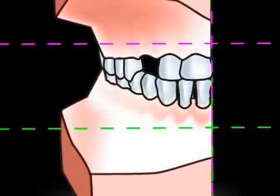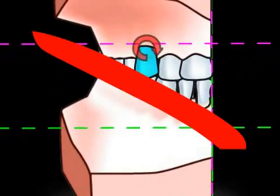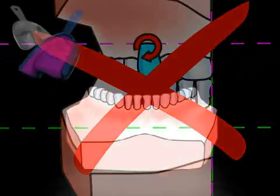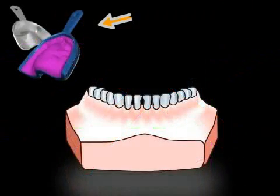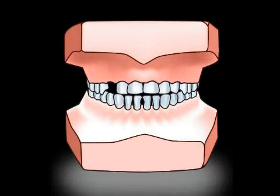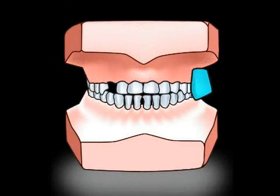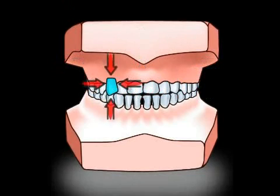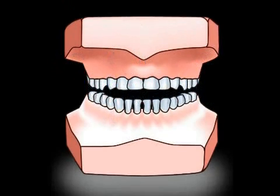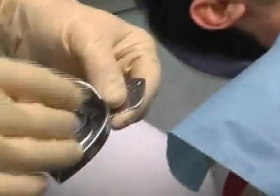The dental prosthesis, shown here in blue, can't be shaped precisely. A full impression yields complete jaw models and thus a so-called three-point contact. Therefore, the models cannot be swiveled, and it is only then that the technician is able to produce an exact fitting dental prosthesis.